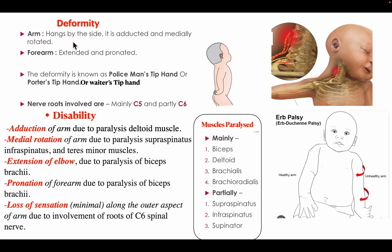The deformity related to Erb's paralysis is: the arm is hanging by the side, adducted and medially rotated, and the forearm is extended and pronated. This deformity is known as policeman's tip deformity, also known as porter's tip hand deformity, or waiter's tip hand deformity. The nerve roots involved are C5 and partly C6, and the muscles paralyzed include biceps, deltoid, brachialis, brachioradialis, supraspinatus, infraspinatus, and supinator.